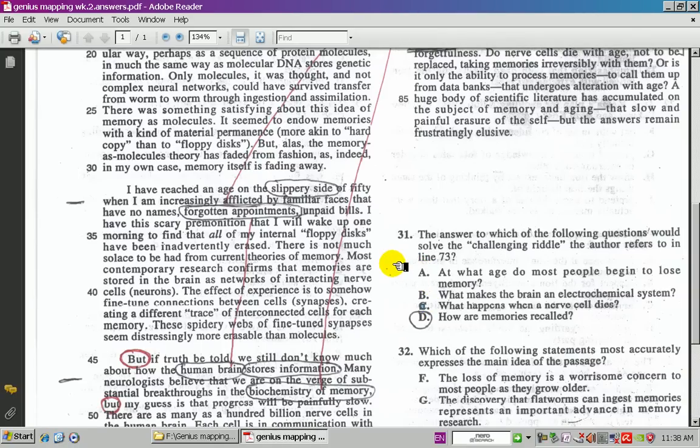Let's go ahead and take a look at A. A says, at what age do most people begin to lose memory? That is a little bit too specific because that talks about paragraph 2 only. D, therefore, will be the correct answer when you look at the central theme. Remember, the central theme, the questions are going to revolve around that central theme.